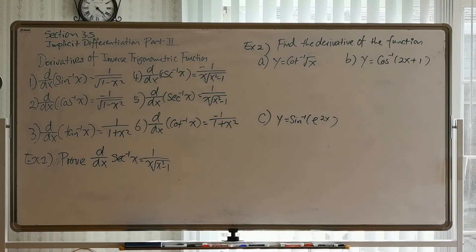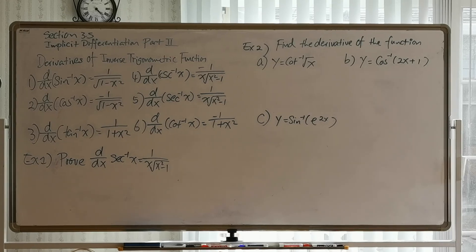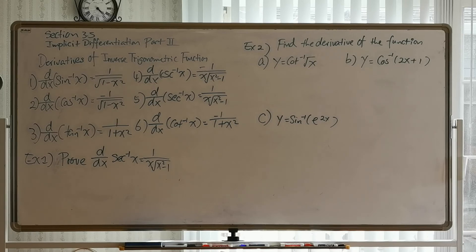In this calculus class we cover the brand new formulas for derivatives of inverse trigonometric functions. The derivative of inverse sine of x is 1 over the square root of the quantity 1 minus x squared. For inverse cosecant, it's negative 1 over x times the square root of x squared minus 1. Notice that inverse sine and inverse cosine have similar structures — one is positive, the other is negative.